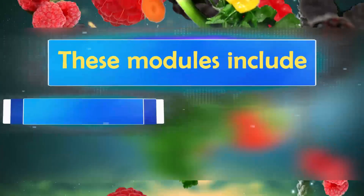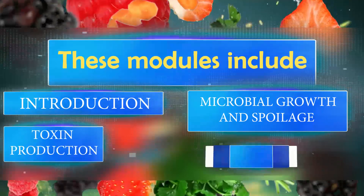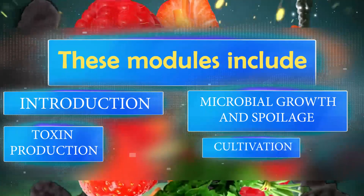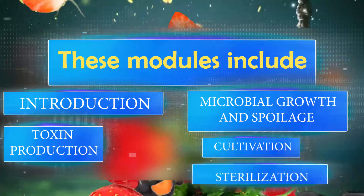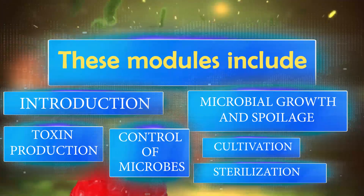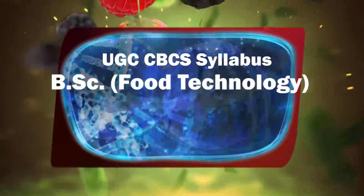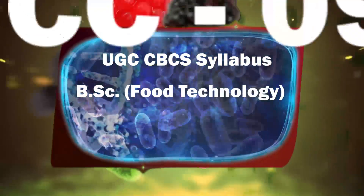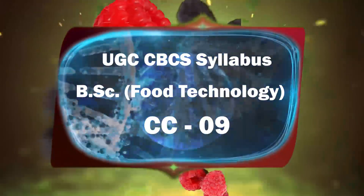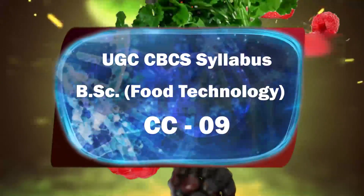These modules include introduction, microbial growth and spoilage, toxin production, cultivation, sterilization and control of microbes. It is based on core paper 9 of the UGC CBCS syllabus of BSC Food Technology.